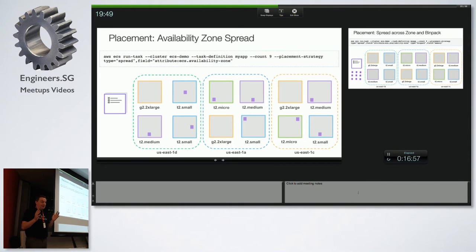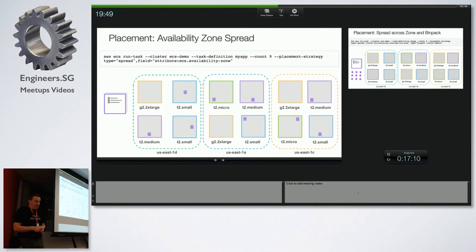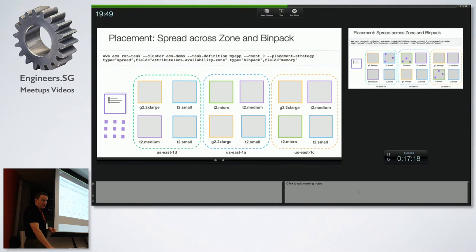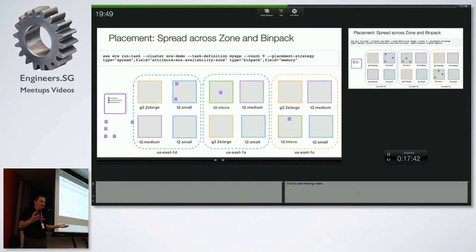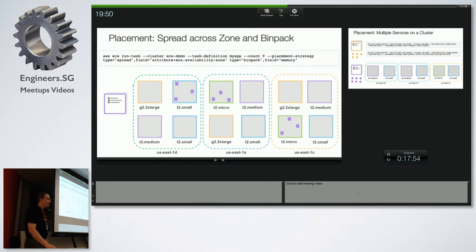A slightly different example: spreading across AZs but packing on memory. First spread them across AZs, then pack them for memory. It's a mix of high availability and cost optimization.